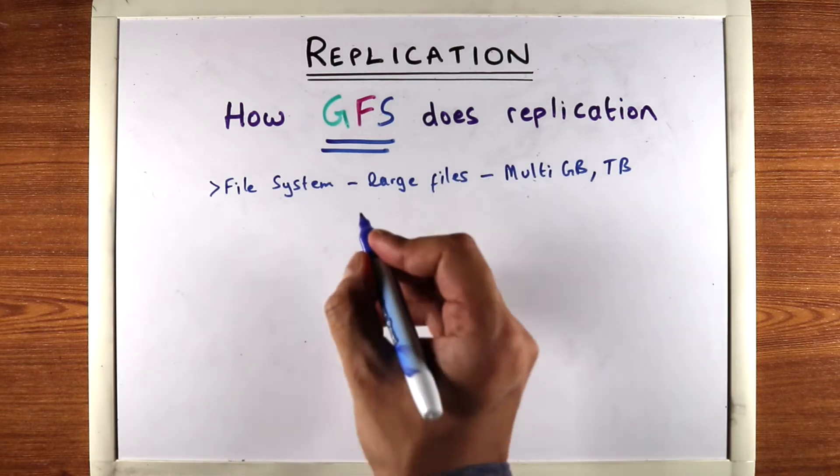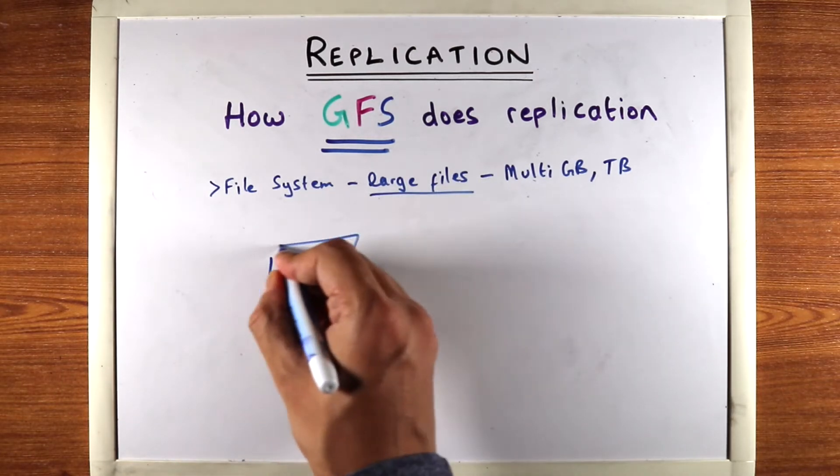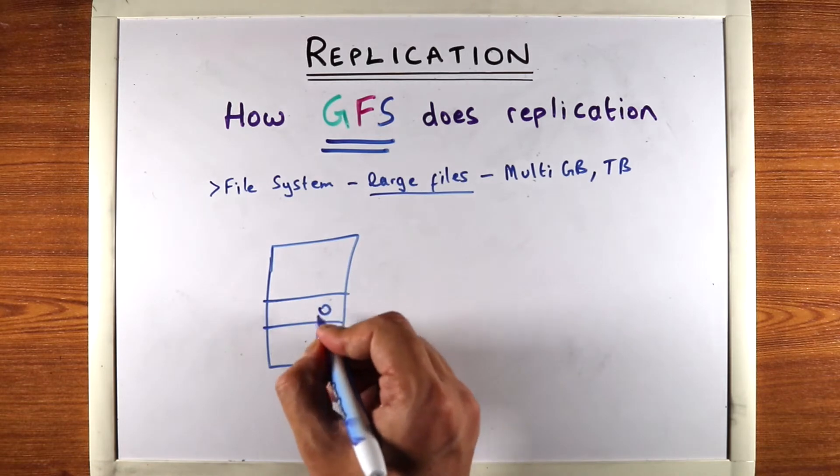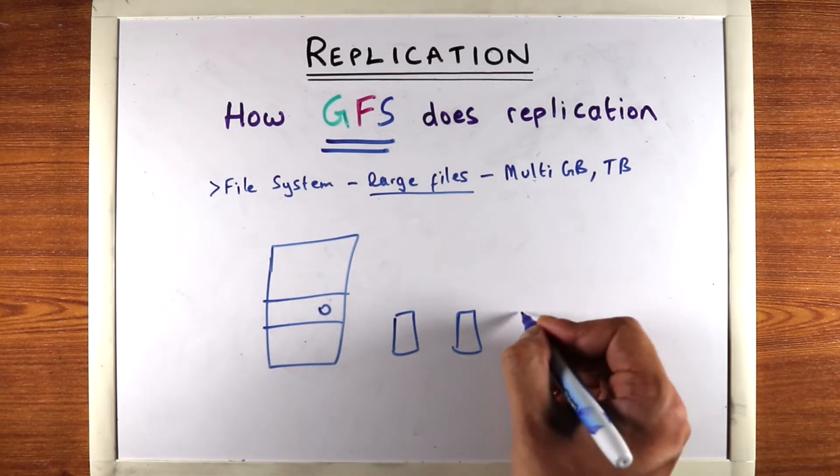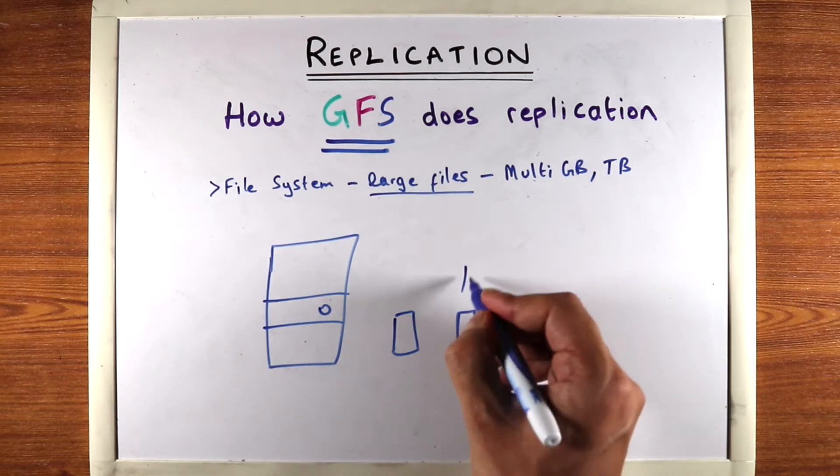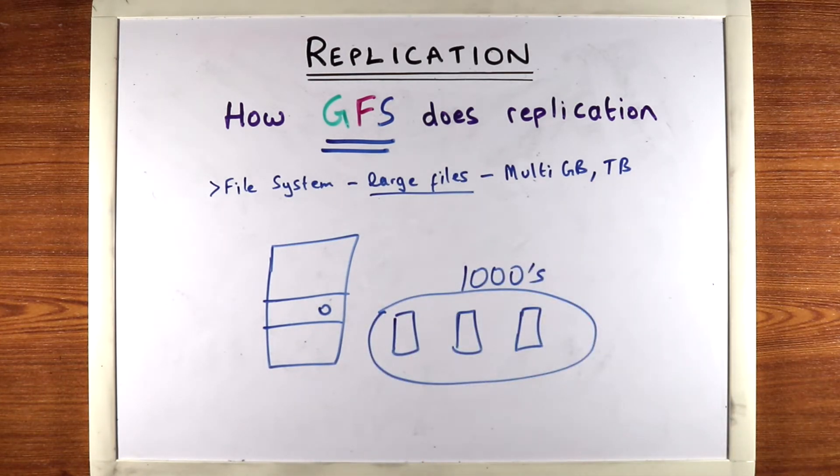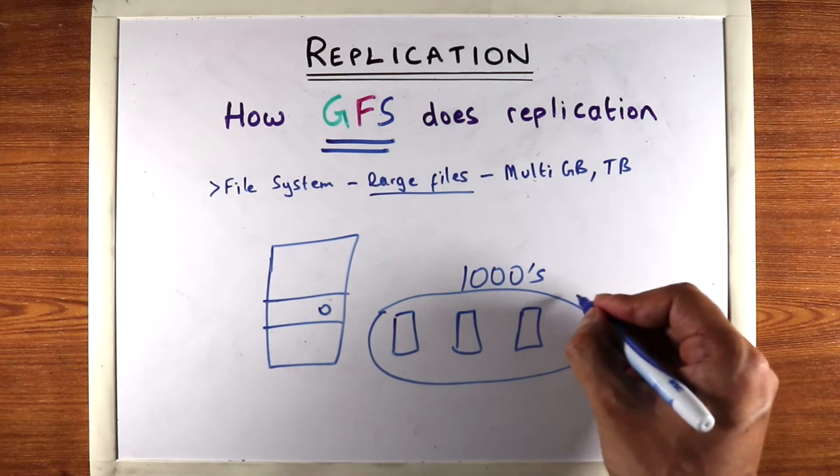So when you have these large files to store, you can either buy really large and expensive storage racks, or you can use cheap commodity machines, which are your average CPUs, and use thousands of these and have them coordinate with each other to store these files. And this is what Google file system does.